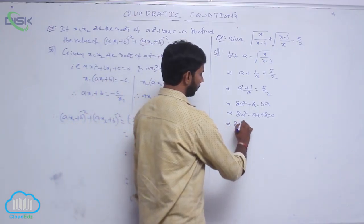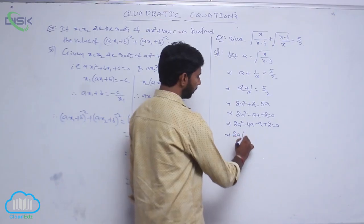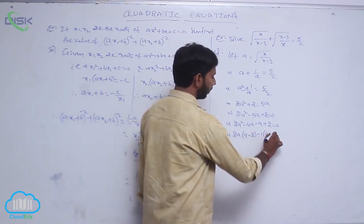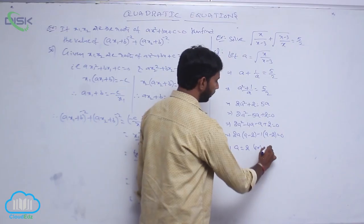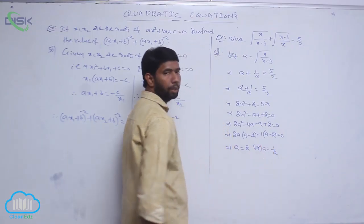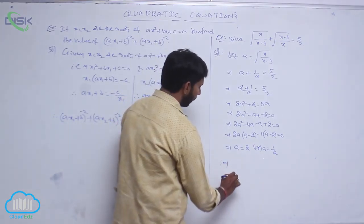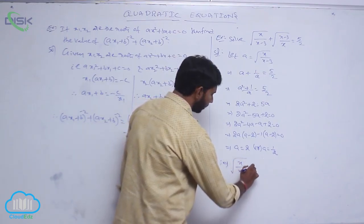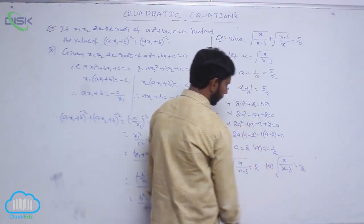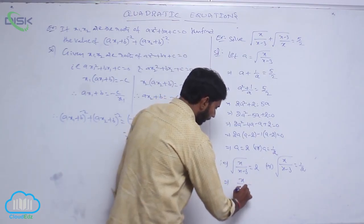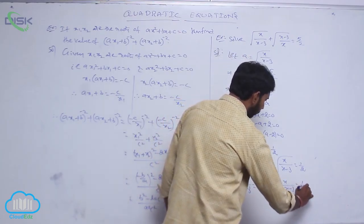Splitting into factors: 2a² − 4a − a + 2 = 0. Taking 2a common: 2a(a − 2) − 1(a − 2) = 0, so (2a − 1)(a − 2) = 0. This gives a = 2 or a = 1/2. Therefore √(x/(x−3)) = 2 or √(x/(x−3)) = 1/2. Squaring both sides: x/(x−3) = 4 or x/(x−3) = 1/4.